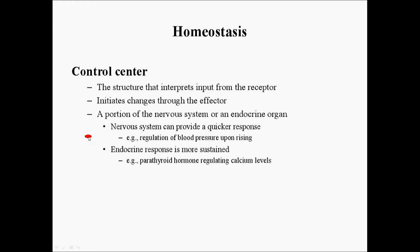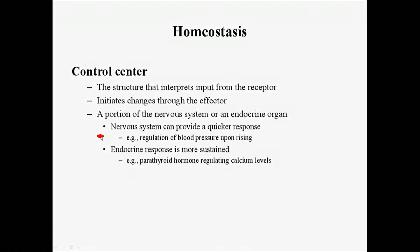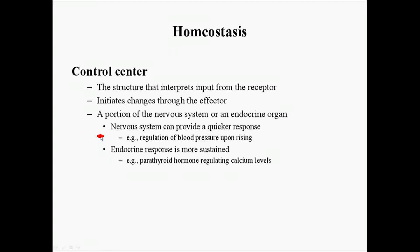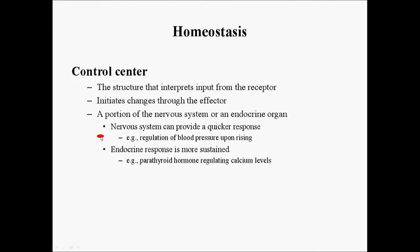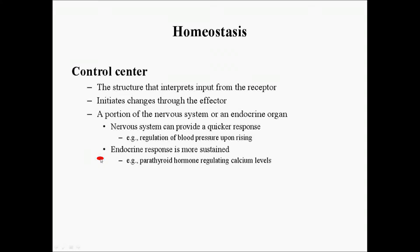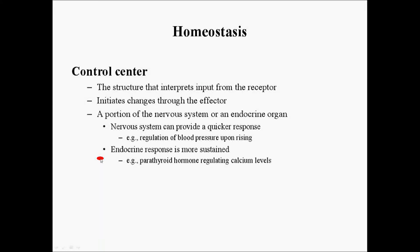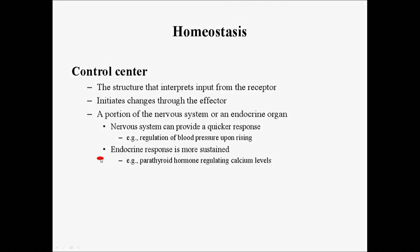An example for the nervous system is the regulation of blood pressure — whenever it rises, the body makes changes so that blood pressure returns to normal. For the endocrine system, an example would be parathyroid hormone, which is released from the parathyroid gland to regulate calcium levels within the blood.